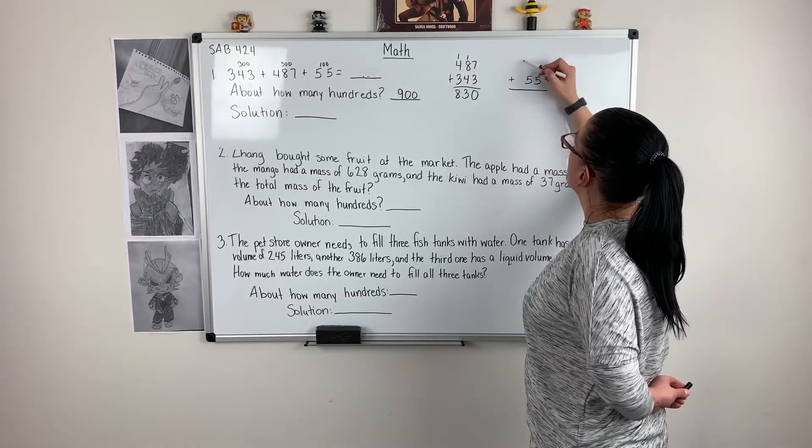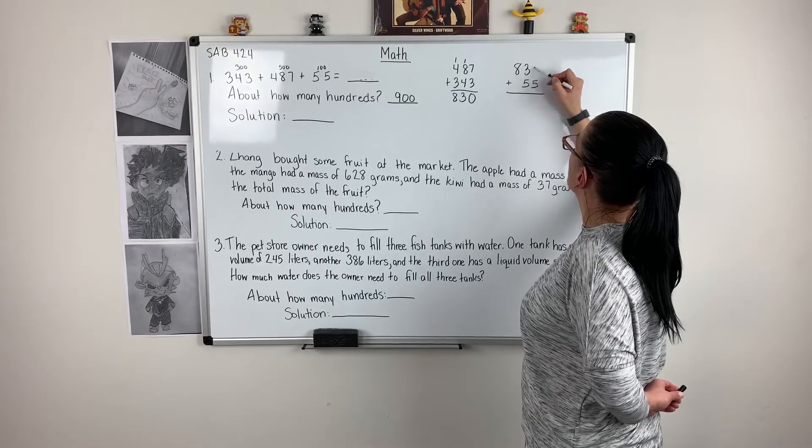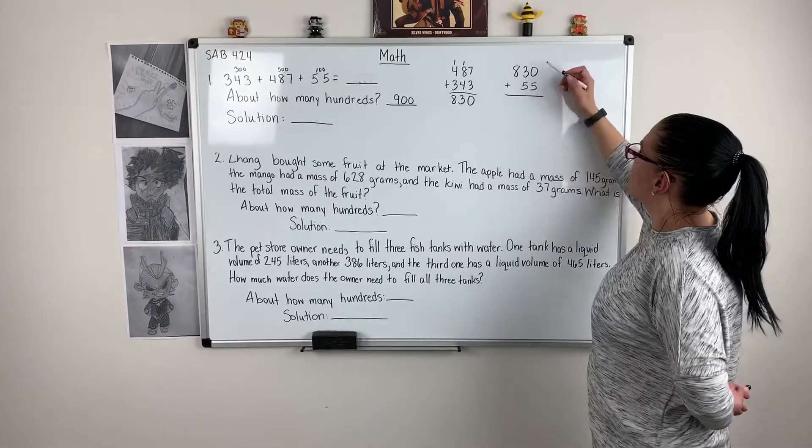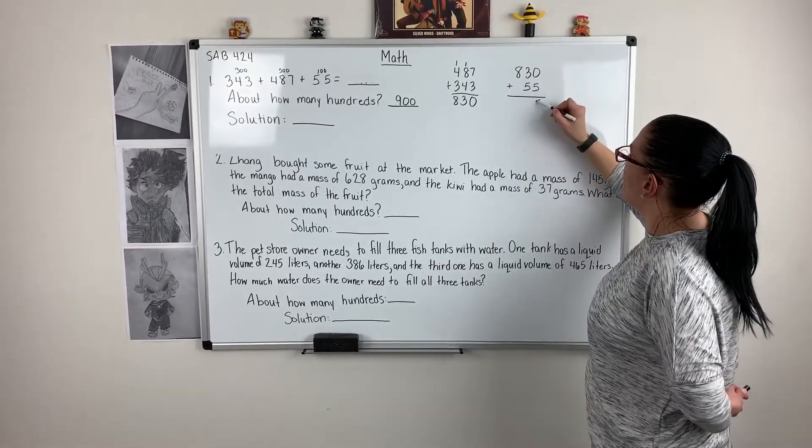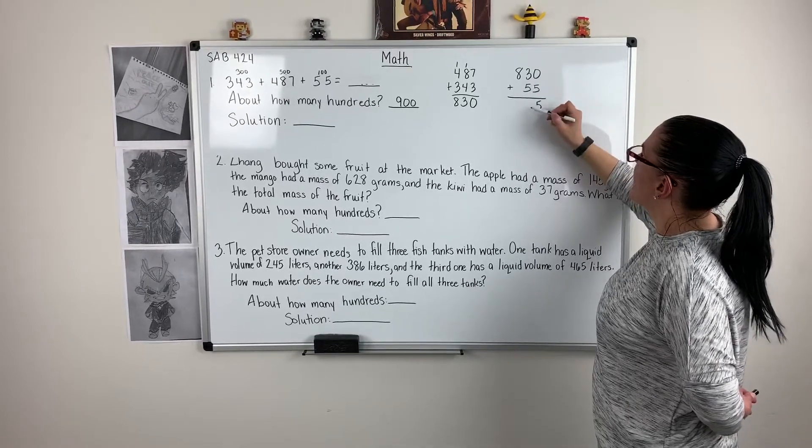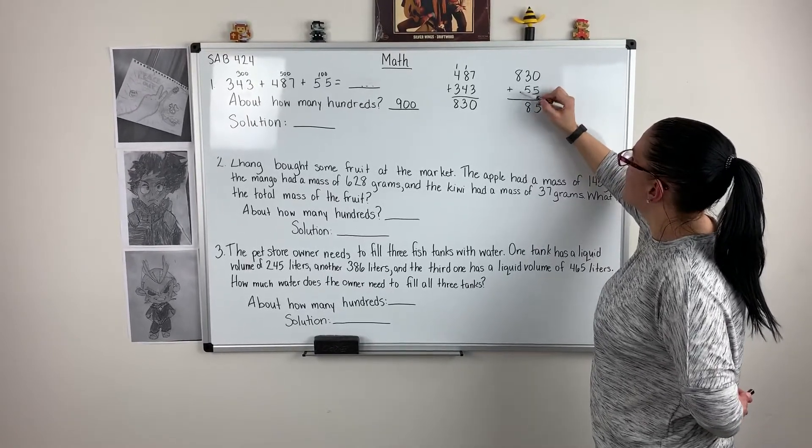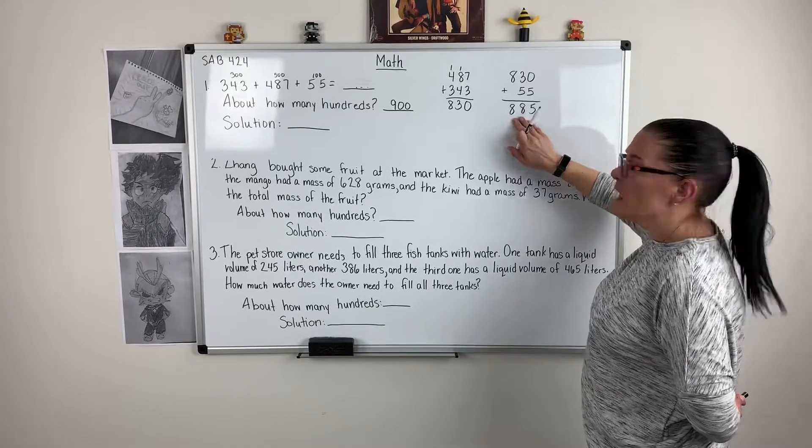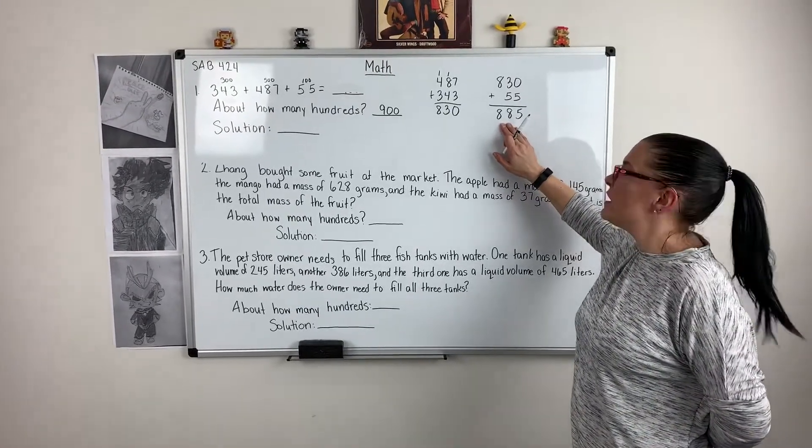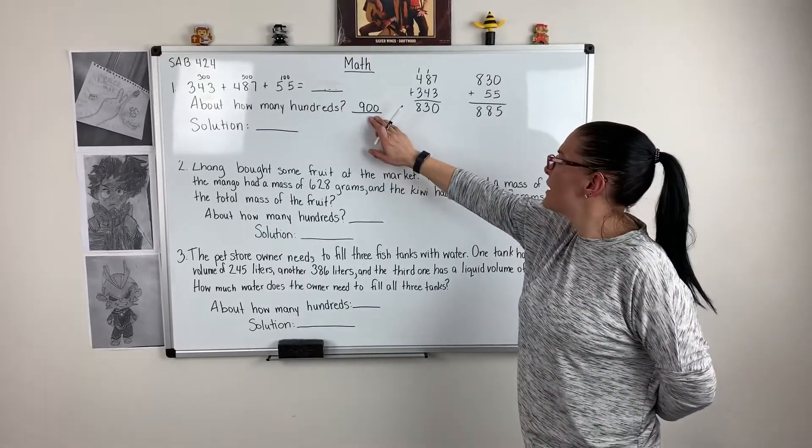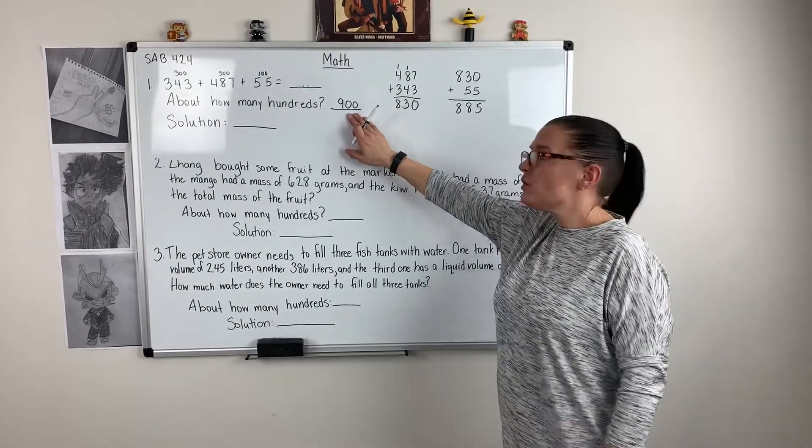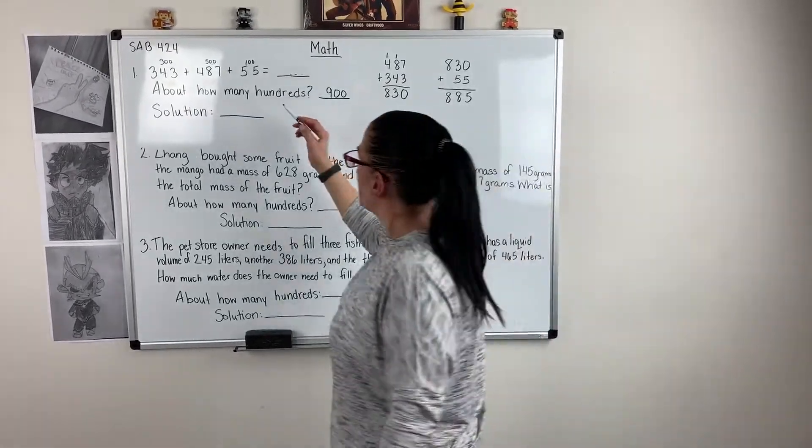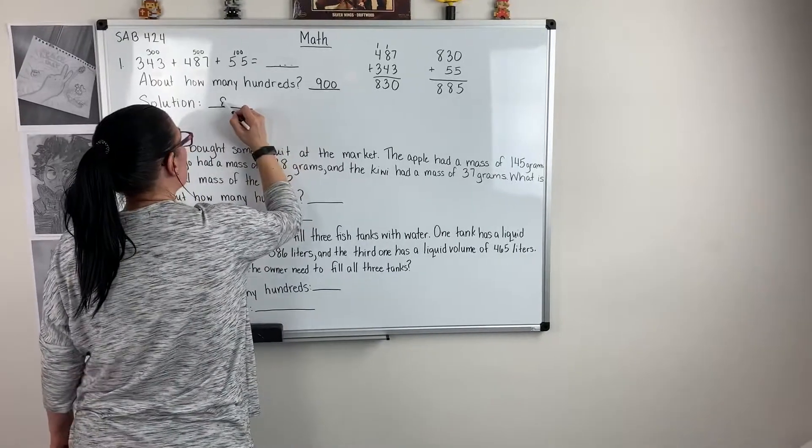I'm going to bring that total to this problem. 830 plus 55. 0 plus 5 is 5. 3 plus 5 is 8. 8 plus 0 is 8. If I take 885 and I round it to the nearest 100, it's going to give me 900. So my guess is pretty close. So I'm going to say my solution is 885.